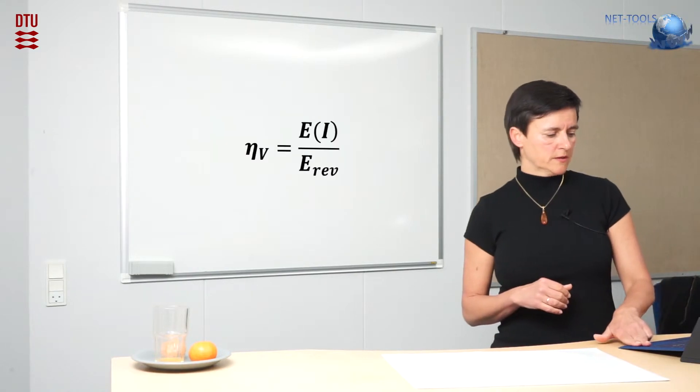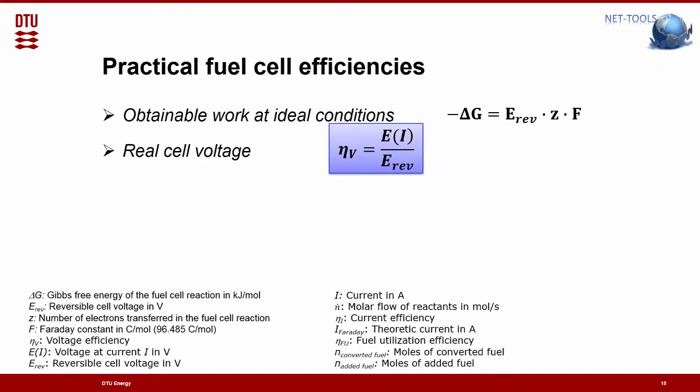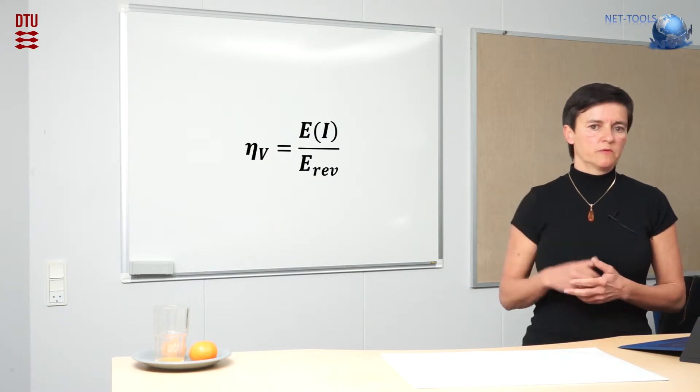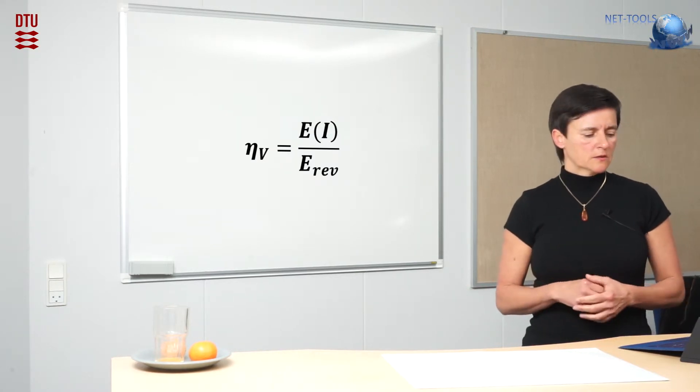The real cell voltage is always lower. As soon as you start to draw a current from the fuel cell, the voltage will be lower than the reversible voltage shown in the first equation. So you get a kind of cell voltage efficiency.